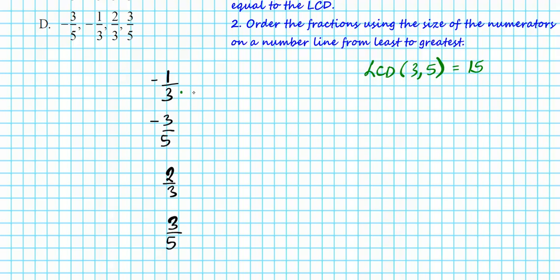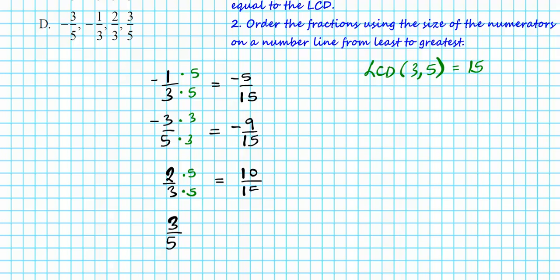Let's take a look at the first one: negative one-third. Multiply the denominator by 5 to get 15, top and bottom, and you get negative 5 over 15. The next number, negative three over five: multiply by 3, top and bottom, giving the equivalent fraction negative 9 over 15. Next, two-thirds: multiply by 5, top and bottom, giving 10 over 15. And three-fifths: multiply by 3, top and bottom, giving 9 over 15.